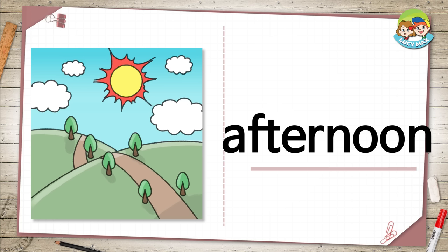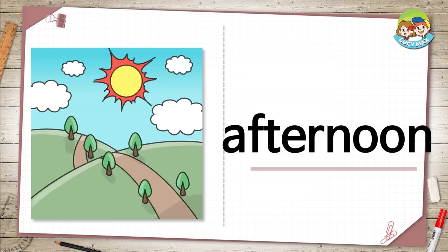Afternoon. This is a time of day when the sun is high in the sky. It is between 12 o'clock and 5 o'clock. Usually, the afternoon is hotter than morning, evening, and night. What do you do in the afternoon?